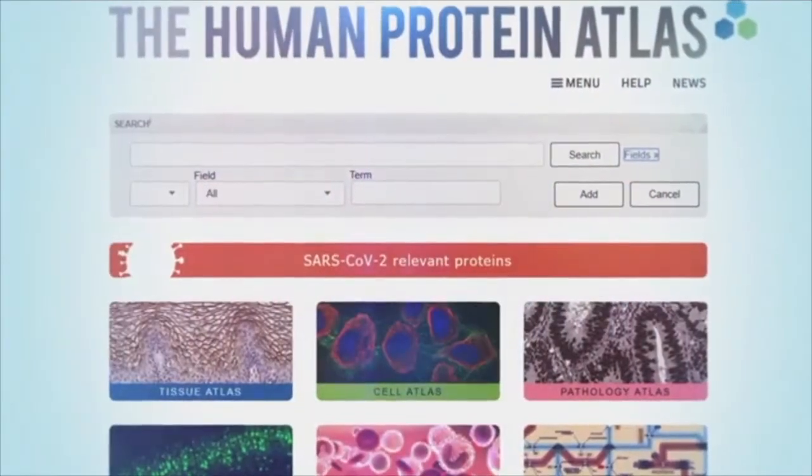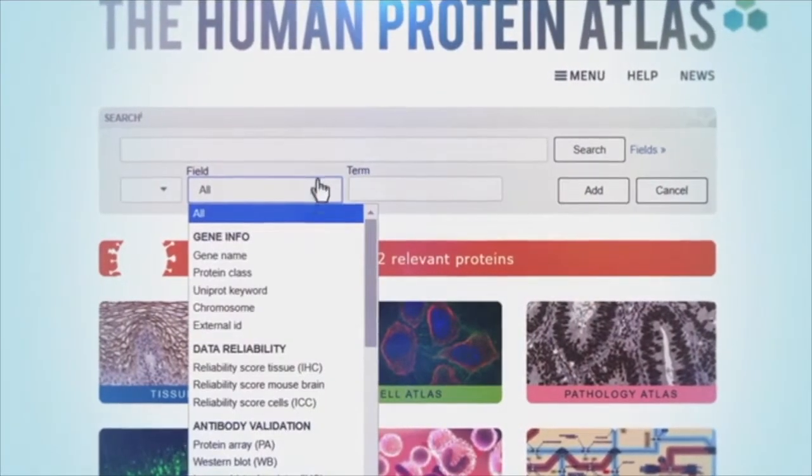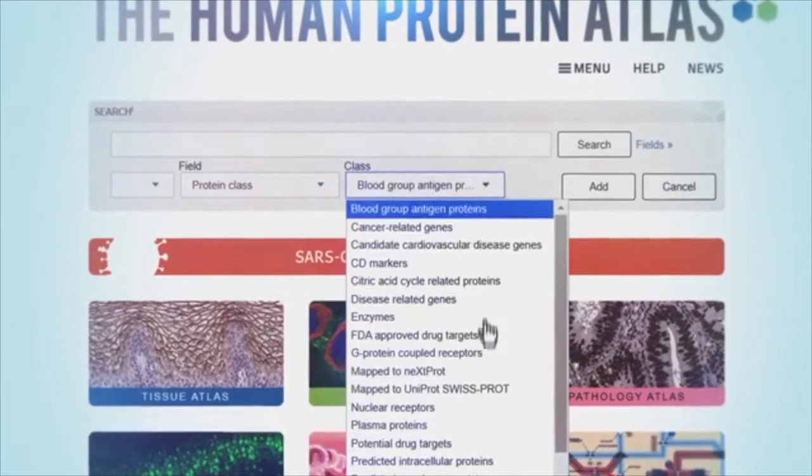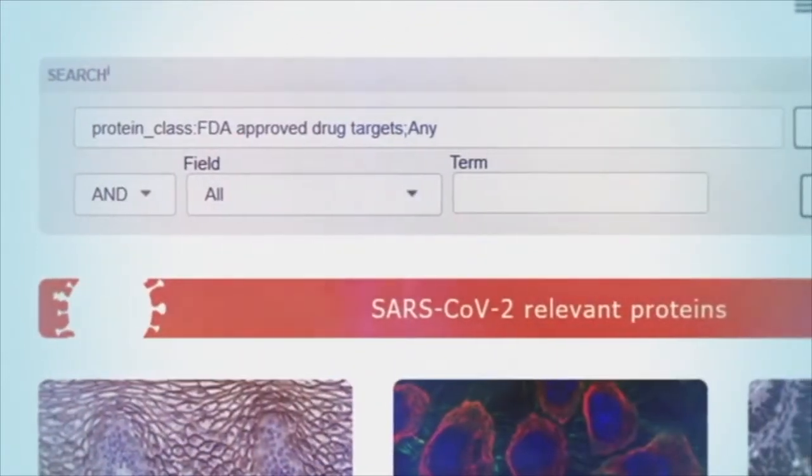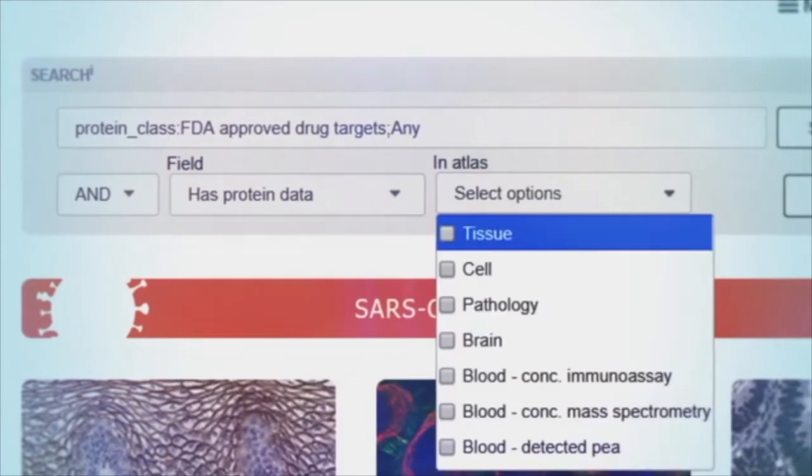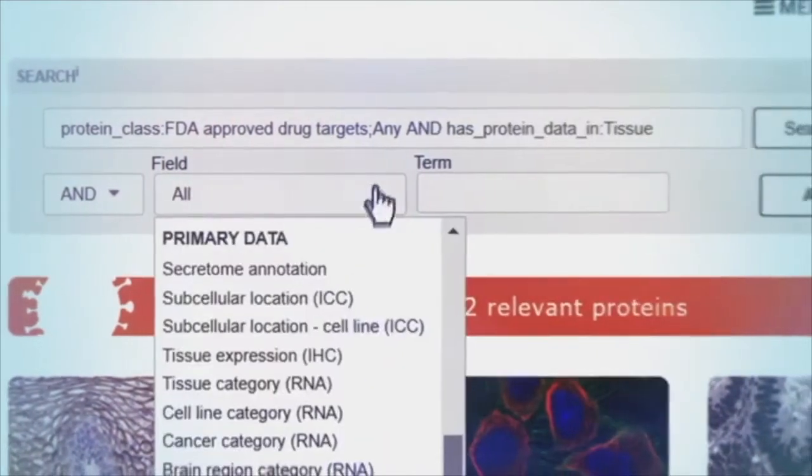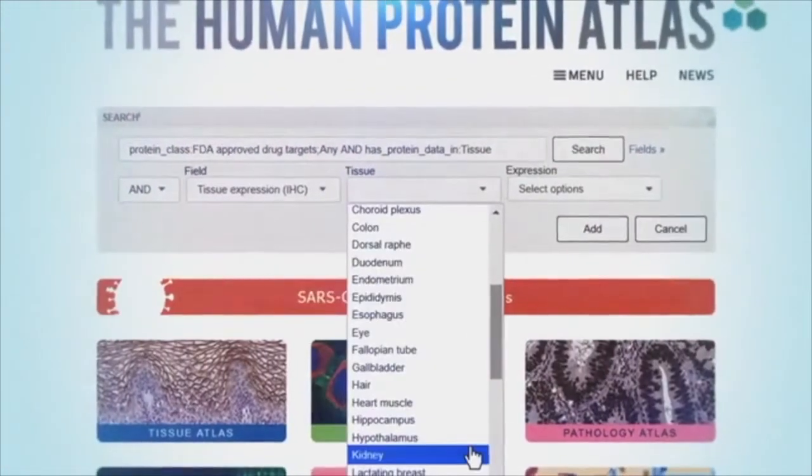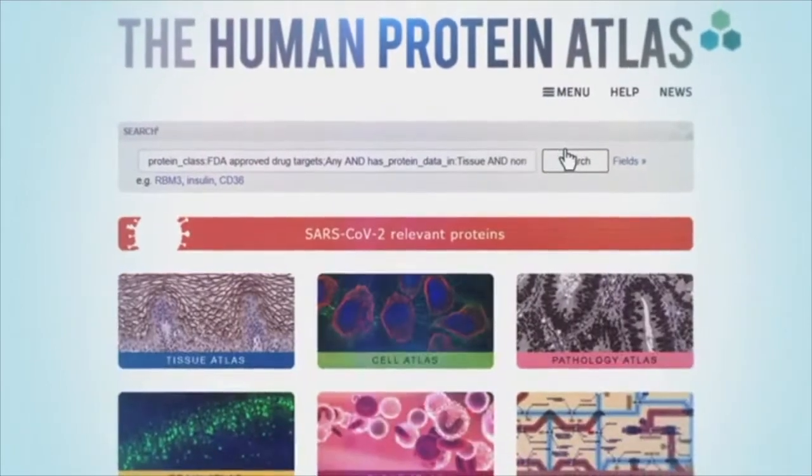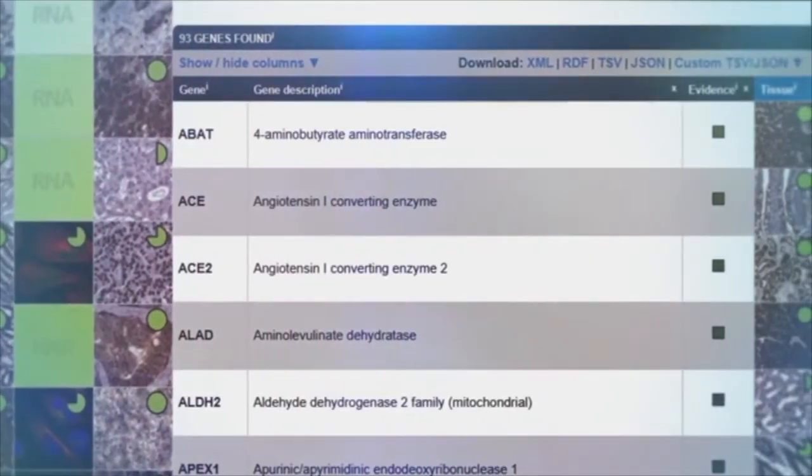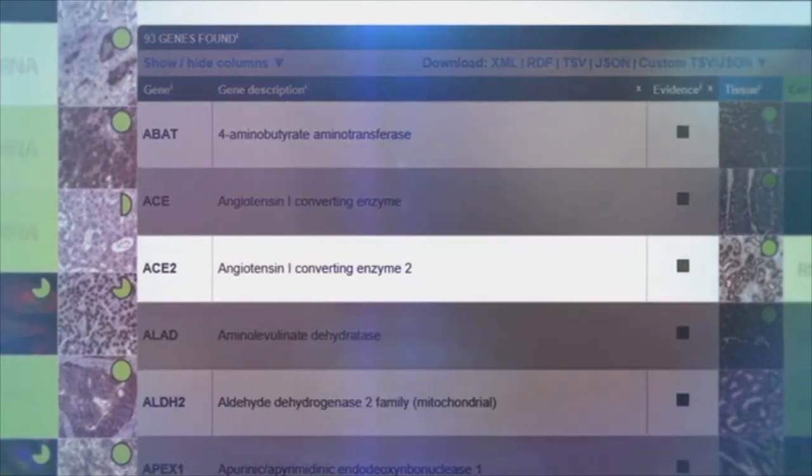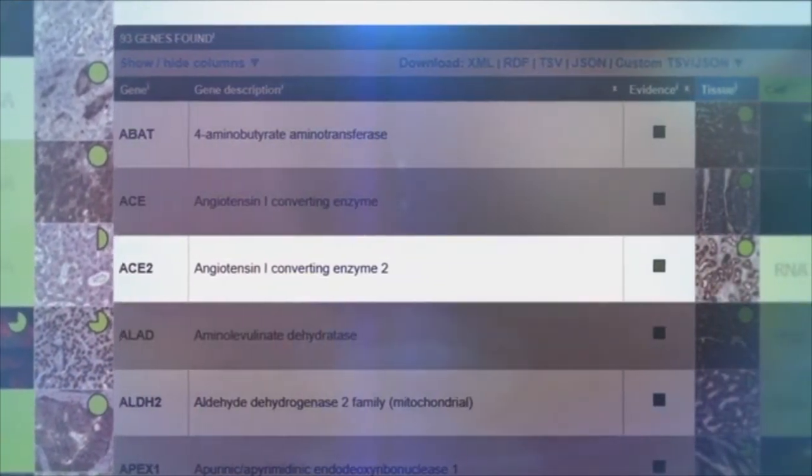The search function on the home page can be used to make simple queries like finding a protein by name or more complex ones, like FDA-approved drug targets with data in the tissue atlas and with high expression in a certain cell type in the kidney. This gives us 93 hits, with the third hit being the receptor for COVID-19.